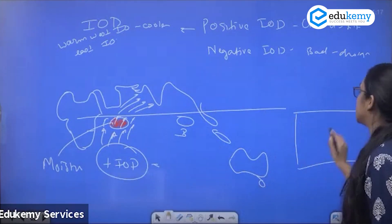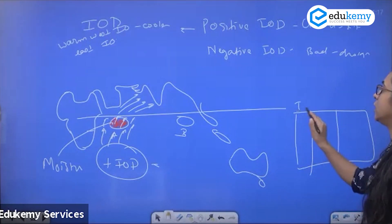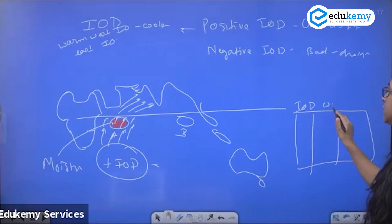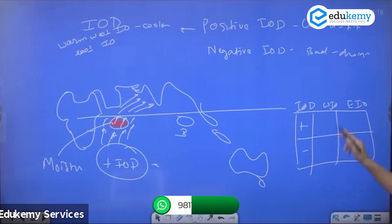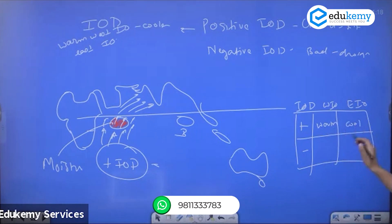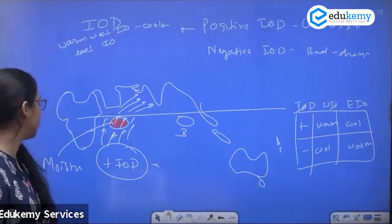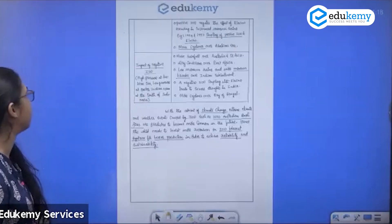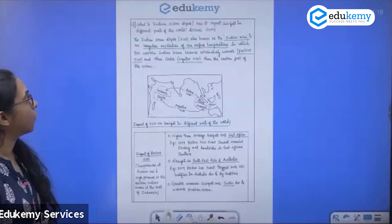You can also make a chart: IOD has West Indian Ocean and East Indian Ocean columns. In positive IOD, West Indian Ocean is warm and East is cool. In negative IOD, West Indian Ocean is cool and East is warm.